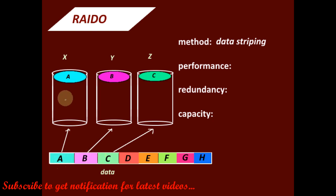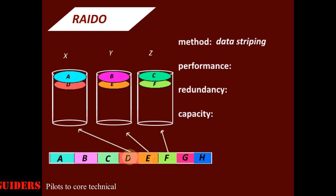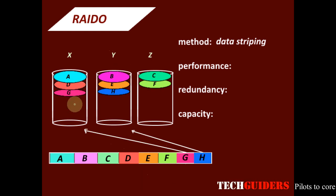So here block A is written to disk X, block B is written to disk Y, block C goes to disk Z and block D is again written to disk X, block E to disk Y, block F to disk Z and block G to disk X and block H to disk Y respectively.